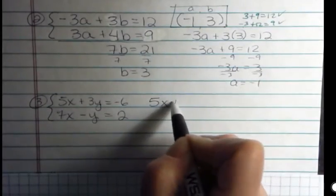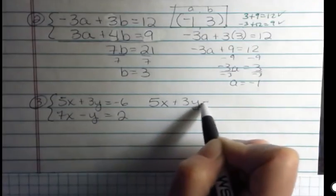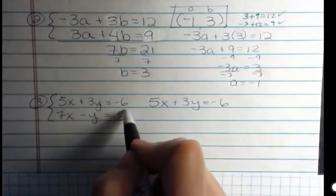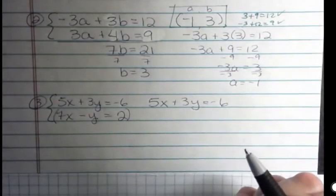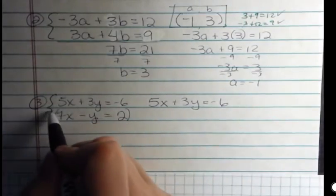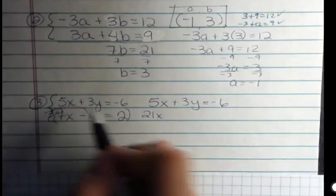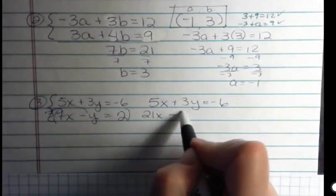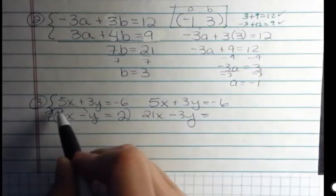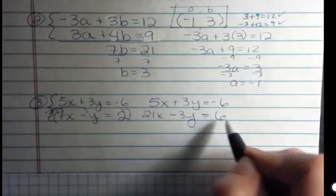So I'm always trying to get something to be opposites. I'm not changing the top equation, so I'm just going to rewrite that. But down here, I'm multiplying this whole thing by 3. 3 times 7 is 21x. 3 times negative y is negative 3y. And 3 times 2 is 6.